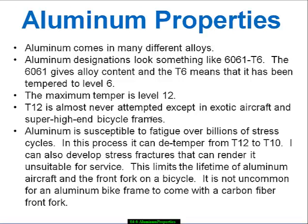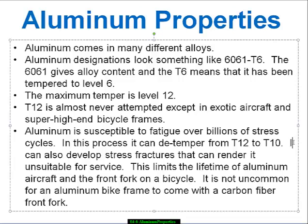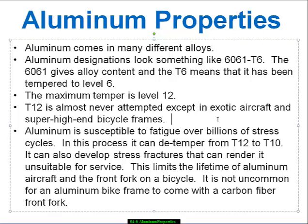Aluminum is susceptible to fatigue over billions of stress cycles. In this process it can de-temper from T12 to T10, and it can also develop stress fractures that can render it unsuitable for service. This limits the lifetime of aluminum aircraft, and in particular the front fork on a bicycle. It's not uncommon for a really high-end aluminum bike frame to come with a carbon fiber front fork because of this fatigue issue.